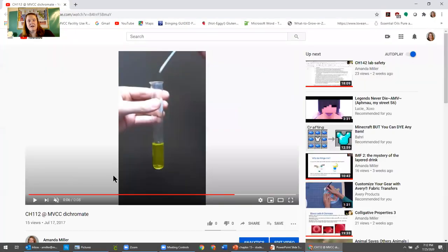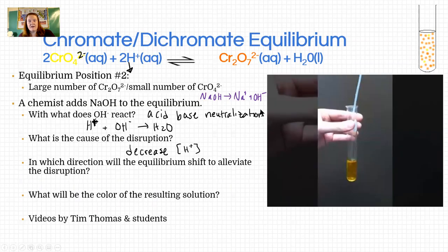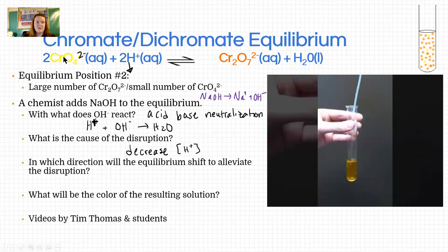Okay, so we went from having a lot of dichromate to having a lot of chromate. So this decreased, this increases. That means the reaction had to shift to the left. That's because we didn't have enough reactant, right? We took some of the reactant away, so it had to replace it.